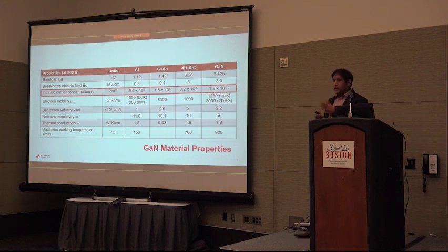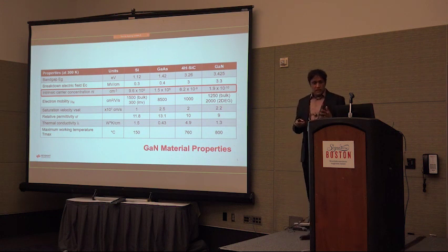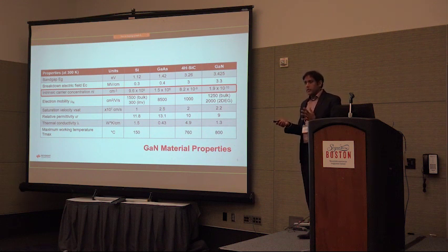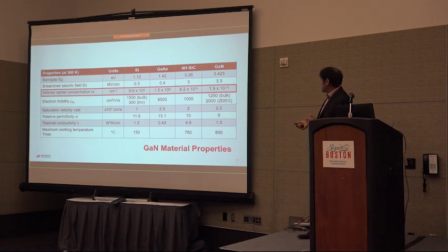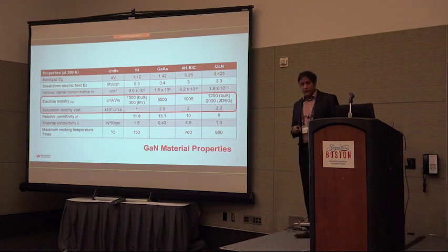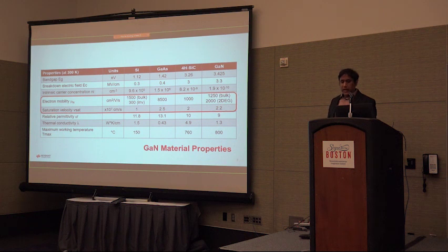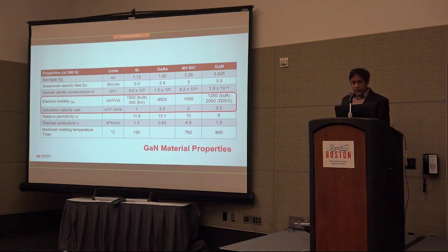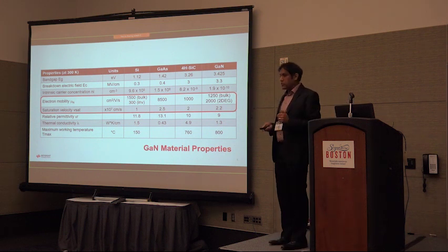For silicon the intrinsic carrier concentration is 9.6 billion per cubic centimeter, whereas for gallium nitride it's essentially an insulator at 1.9×10⁻¹⁰. So where do we get the charge? It turns out the analog to the CMOS inversion layer is a sheet charge — the 2D electron gas. The sheet charge density for the 2DEG is about five times higher than silicon. Mobility describes how fast an electron moves in response to a low electric field, and while GaN mobility isn't as high as GaAs, it's still very high.